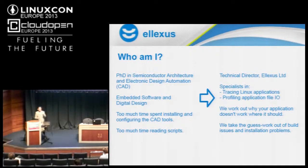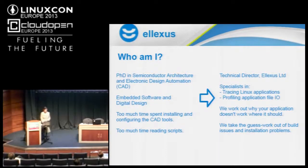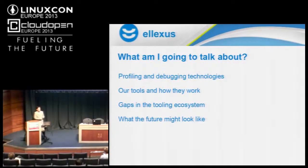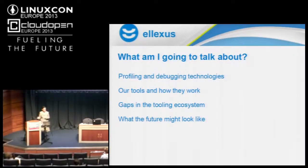The main thing is we work out why your application doesn't work where it should — works fine in your environment, but as soon as you deploy it somewhere else, something goes wrong. We try and take the guesswork out of working out why it's gone wrong. I'm going to talk about profiling and debugging technologies, mention a few tools but focus more on the technology underpinning them, include a bit about our tools, and talk about gaps in the tool ecosystem — what is missing, what do we need, and where we need to go in the future.